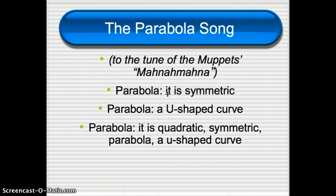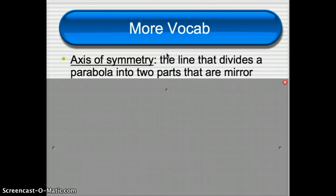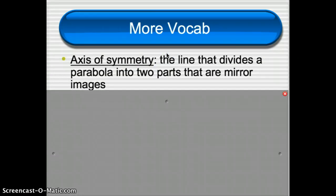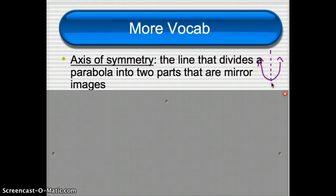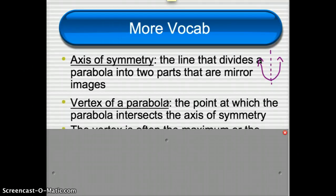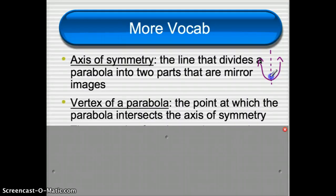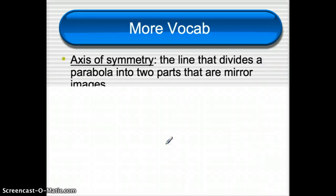Here's more vocabulary to deal with our parabolas and quadratic functions. The axis of symmetry is the line that divides a parabola into two parts that are mirror images. Usually we have a parabola, and the axis of symmetry is the line that you could fold the parabola along and it would match itself exactly.